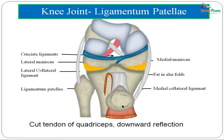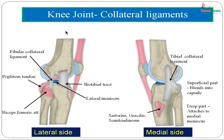A picture shows the ligamentum patellae reflected down with the cut tendon of quadriceps femoris, and the patella reflected to reveal the ligamentum patellae attaching to the tibial tuberosity. The lateral collateral ligament — also called the fibular collateral ligament — is a thick cord-like structure extending from the lateral epicondyle of the femur to the head of the fibula, overlapped by the tendon of biceps femoris. The tendon of popliteus runs between the fibular collateral ligament and the lateral meniscus.